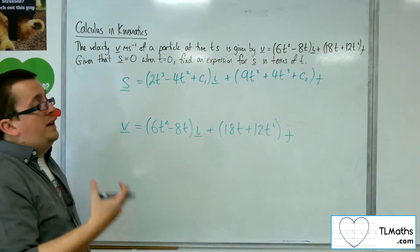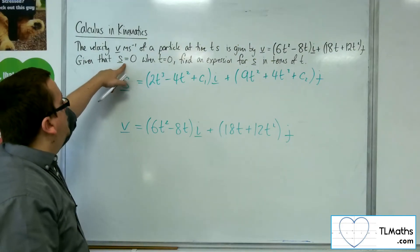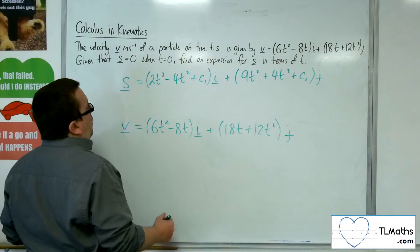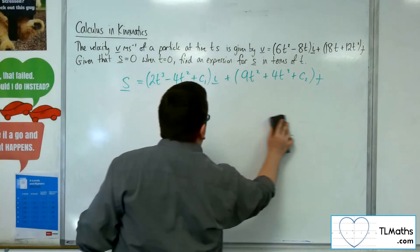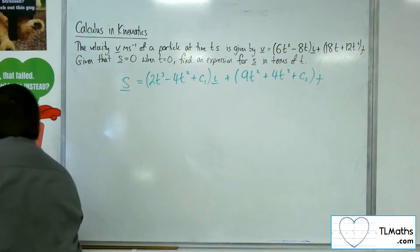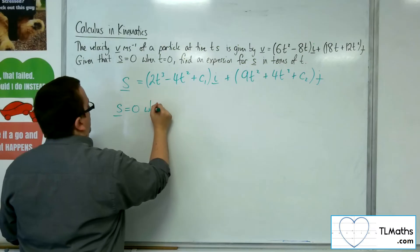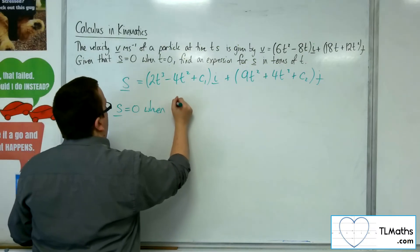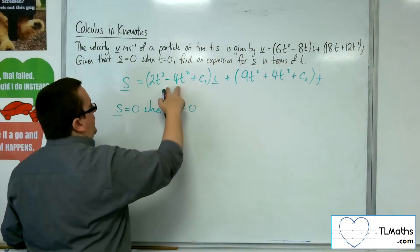So now we can use the initial condition that s is 0 when t is 0. What that would mean is that as s is 0 when t is 0, this component will be 0.